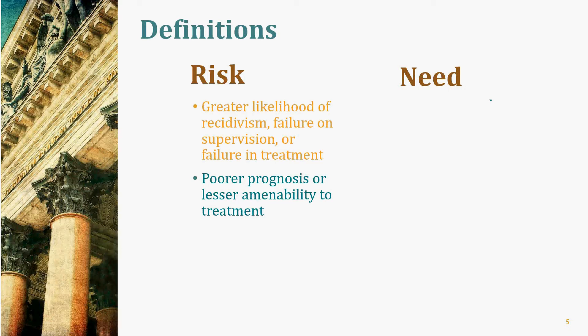Offenders have many needs, not all of which are criminogenic. For example, they have low self-esteem, poor job histories, and poor educational histories — and very often those needs are the result of their criminal or anti-social lifestyle rather than the cause. Research has taught us that if you treat non-criminogenic needs before criminogenic needs, you actually make people worse. Focusing on the wrong things will increase criminal activity, increase substance use, and decrease employment.